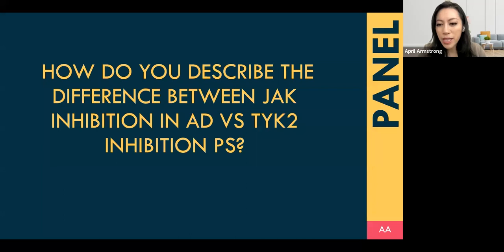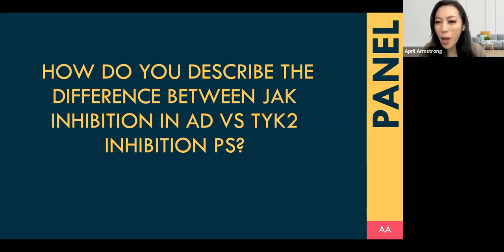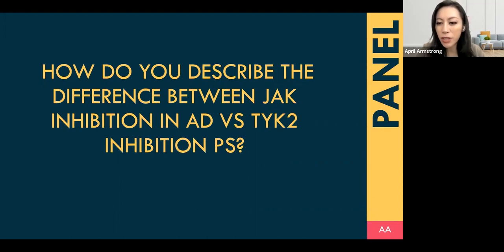The mechanism of action is really important. When we're thinking about our JAK inhibitors — the approved ones, upatacitinib and abrocitinib — they both bind to the active domain. They've been created to be as specific as possible for that active domain. The pathways they affect are different from those of psoriasis, which is why their indication is in atopic dermatitis.